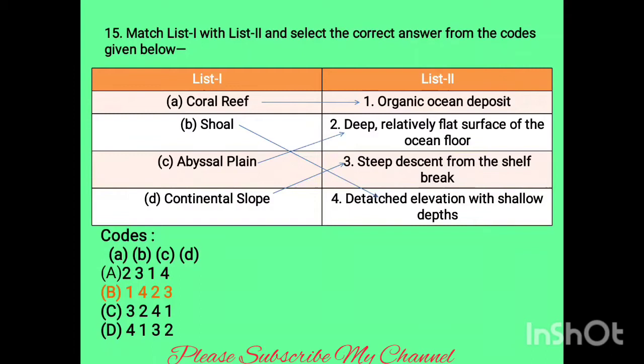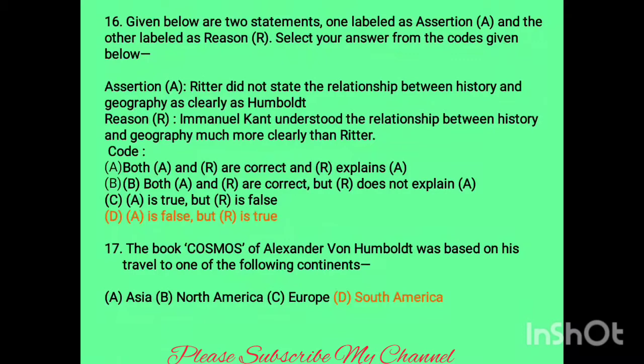Question fifteen is a matching question. List one relates to different landforms below the ocean floor; list two explains why they are found. Coral reef is organic ocean deposit; shoal is a detached elevation with shallow depth; abyssal plain is the deep relatively flat surface of the ocean floor; and continental slope is a steep descent from the shelf break. The right answer is option B.